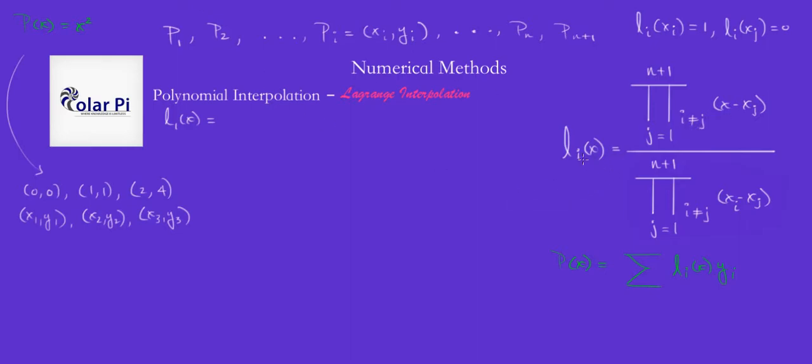So for L3, for example, we skip X minus X3, right? Because that would mean I and J are equal. Yeah? And you'll see this more clearly when I do L1 and L2 and so on.